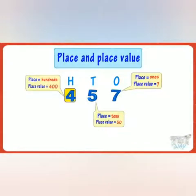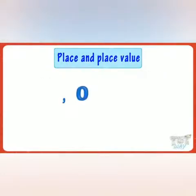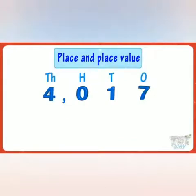The place value of four is four hundred. Now let's take another example. We have another number — let's see the place and place value of each digit in this number.